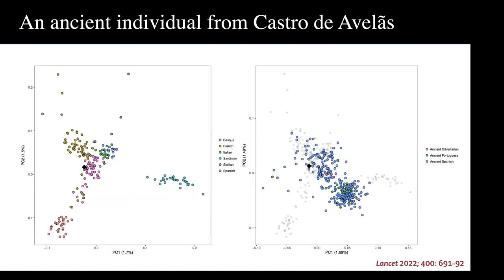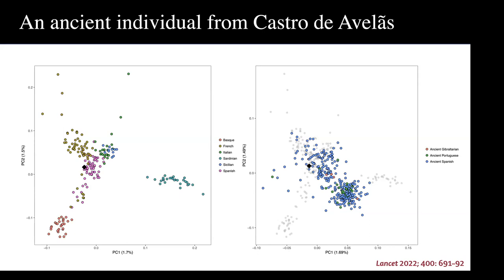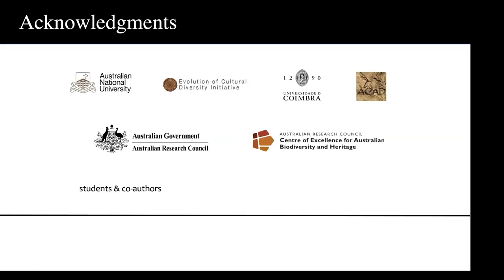We also did a more comprehensive genetic analysis to understand the genetic ancestry of this individual beyond the karyotype analysis. This individual, shown as a black diamond, falls within the distribution of contemporary western and southern European populations. Looking at the available data for ancient populations from Iberia — including Gibraltar, Portugal and Spain — this is also consistent with being a typical Iberian individual.